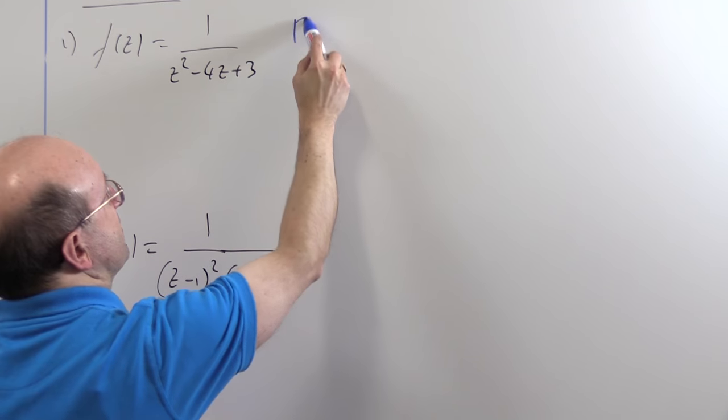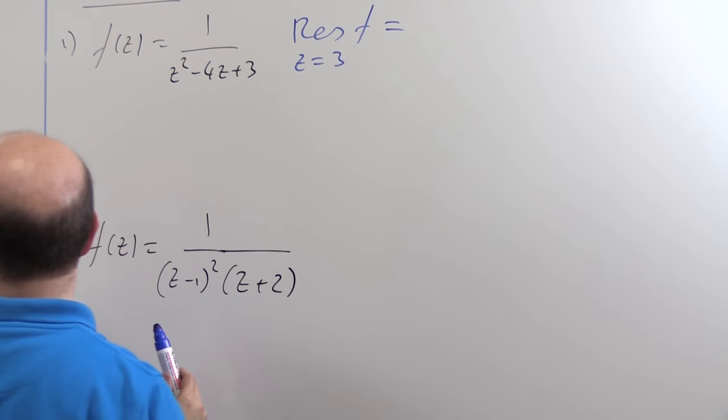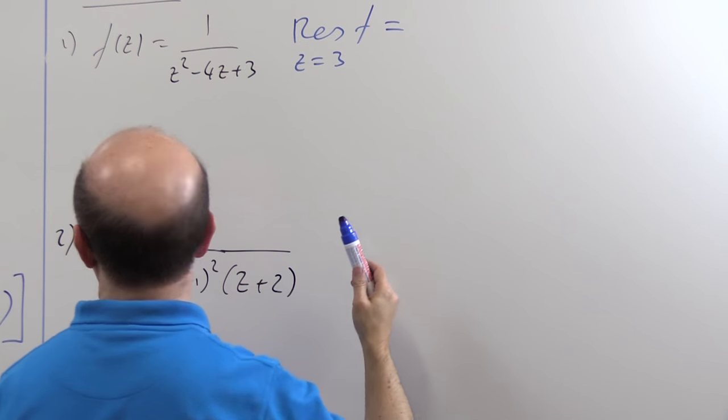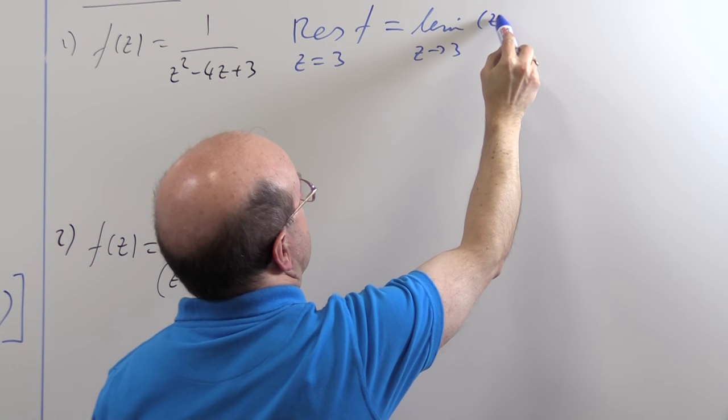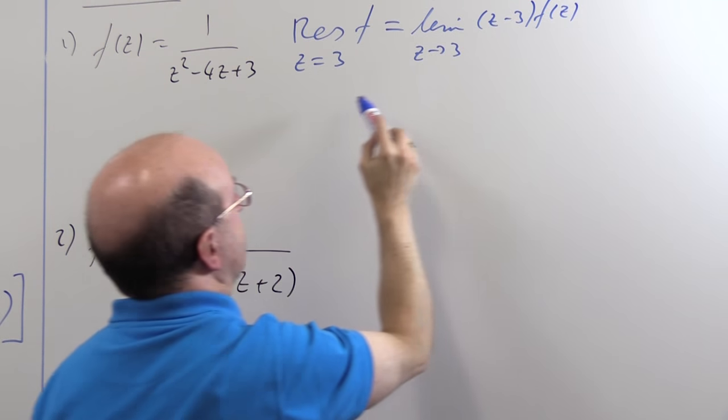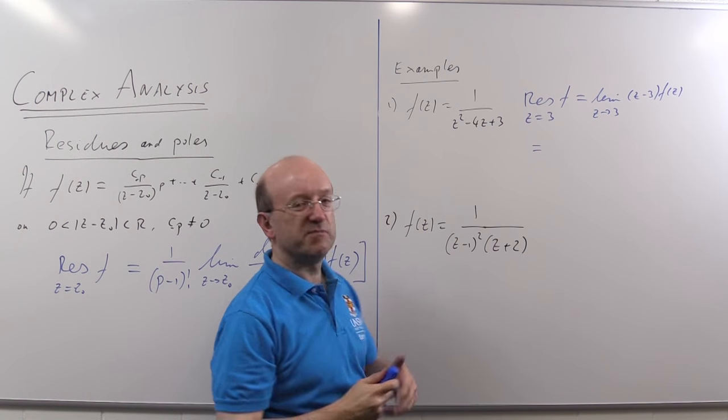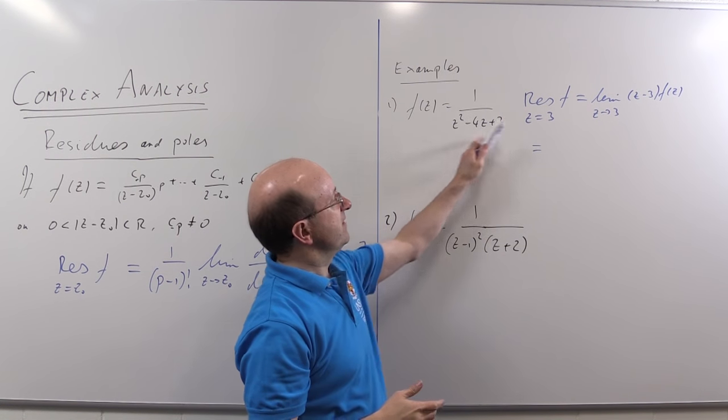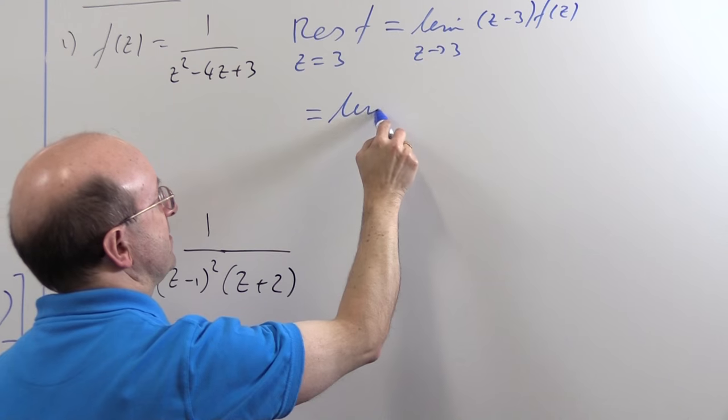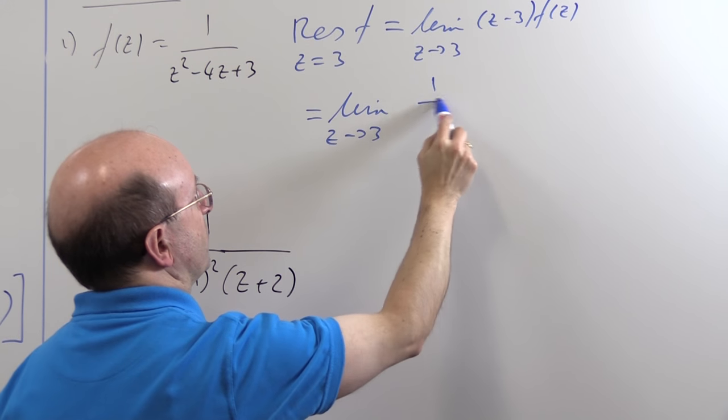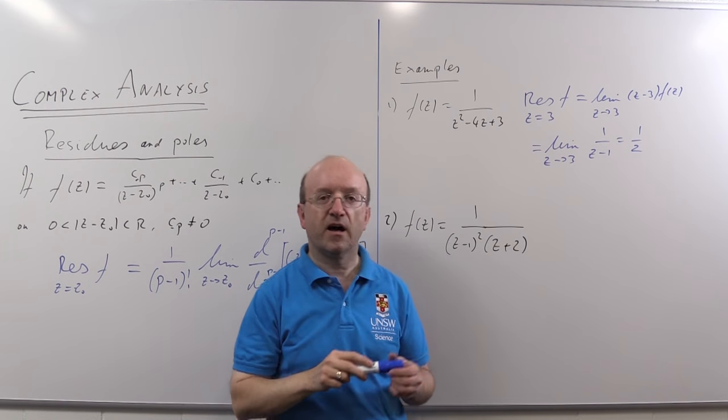So the residue at Z is 3 of F is, well, 1 over 0 factorial, which is of course just 1, times the limit as Z goes to 3 of Z minus 3 times F of Z. Now, you could use L'Hopital to find that limit. It's a bit pointless for something this simple. Factorize that quadratic, cancel off the Z minus 3s, and we're going to get the limit Z goes to 3, 1 over Z minus 1, which is of course a half, and that's the residue.